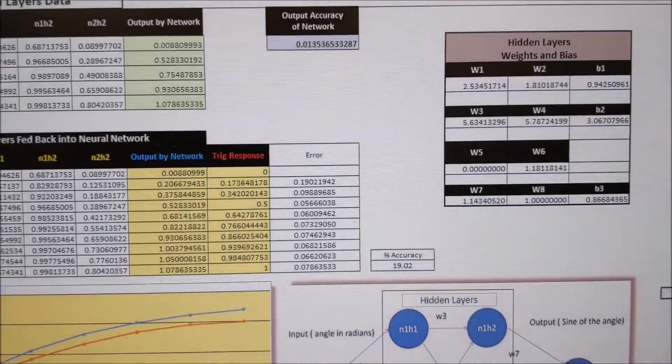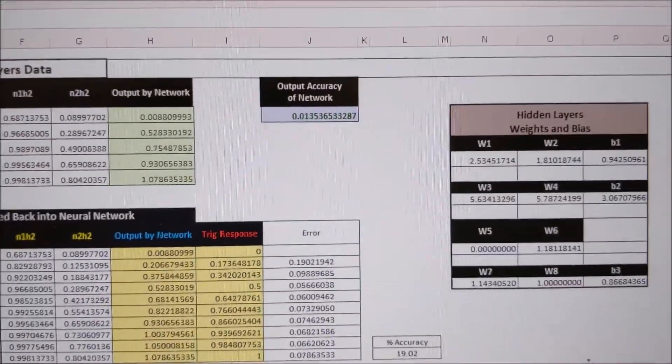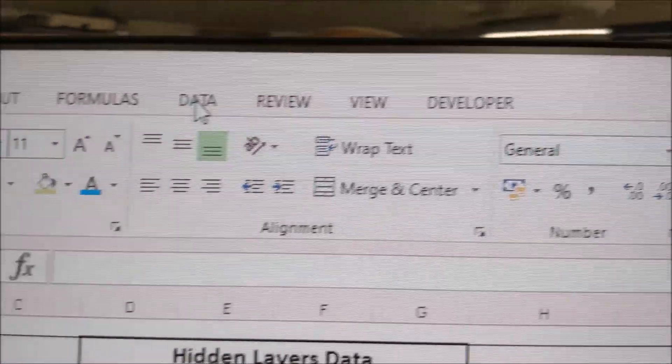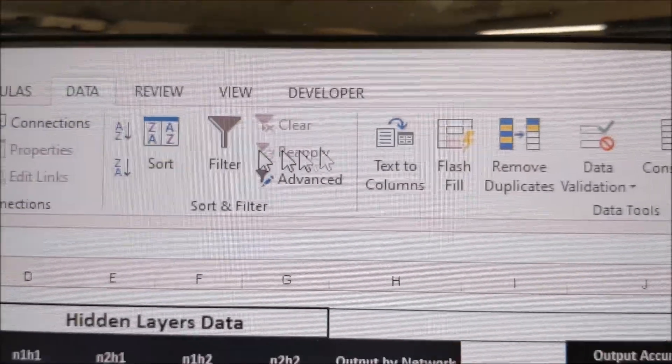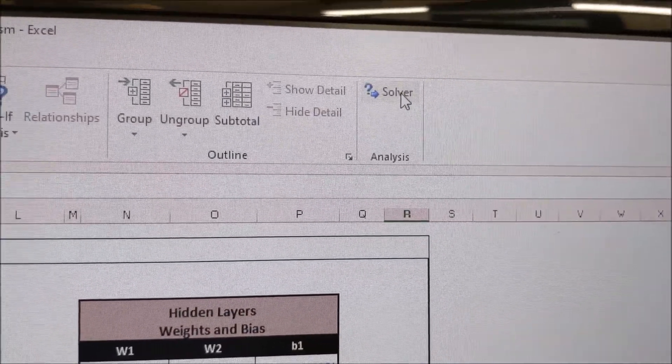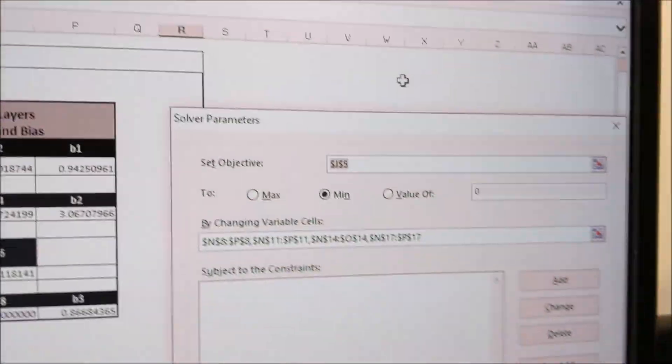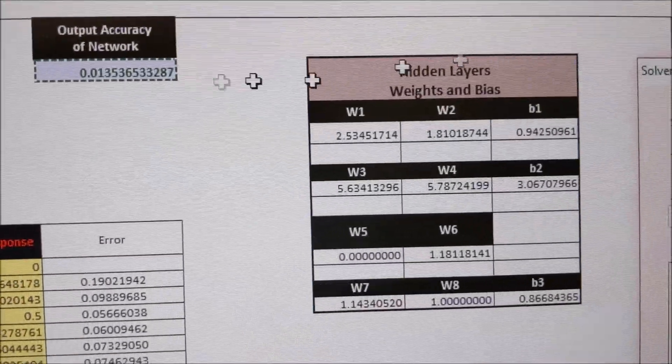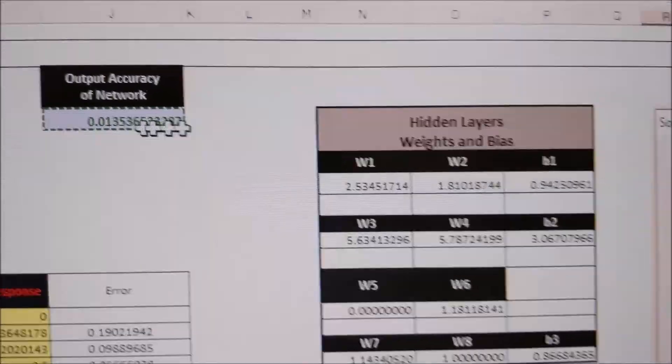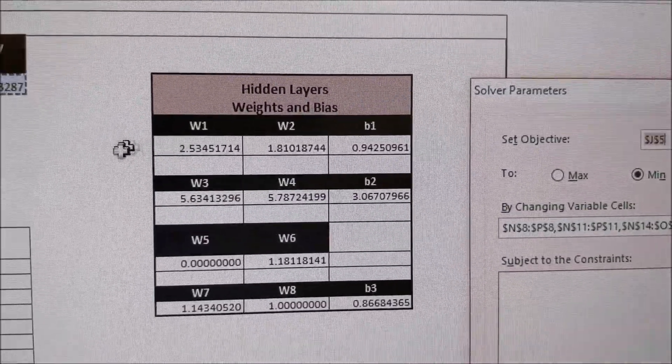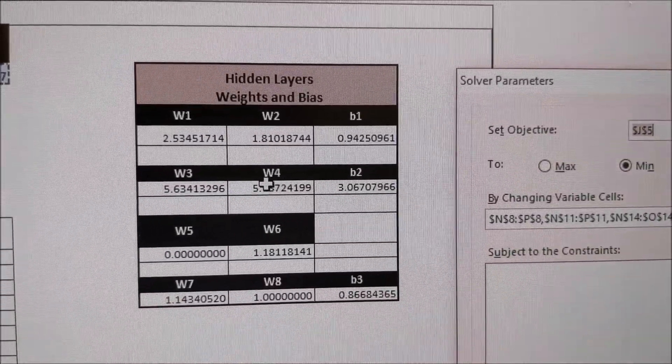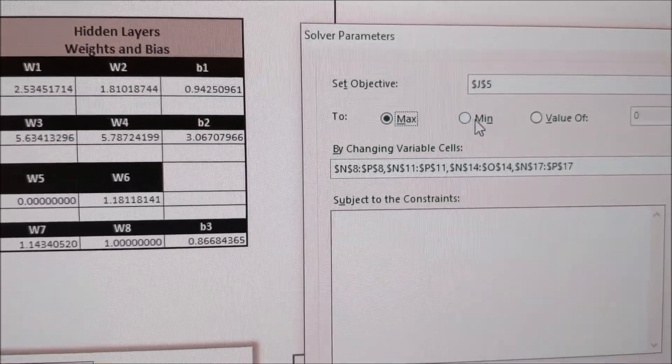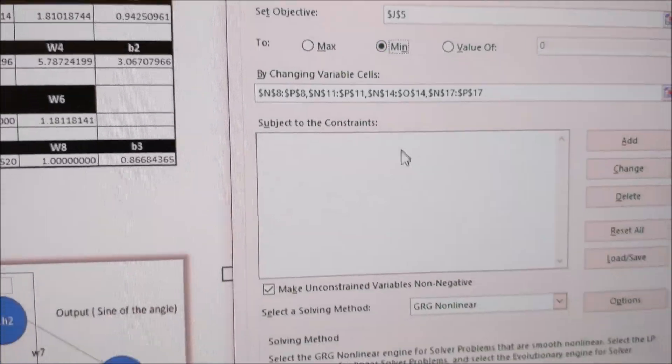Let us have a quick look at going through one training loop. We go into data and we scroll across onto Solve. And this window comes up and we want to minimize this value. And how do we minimize that? We can change all these weights and biases. And that's what we put there. So that's all we have to do. We don't want to maximize. We want to minimize the error. And then we click solve.